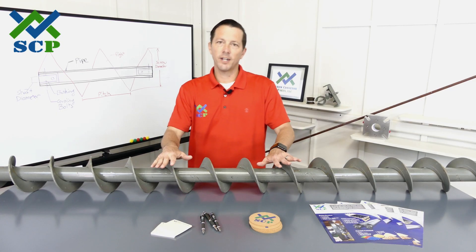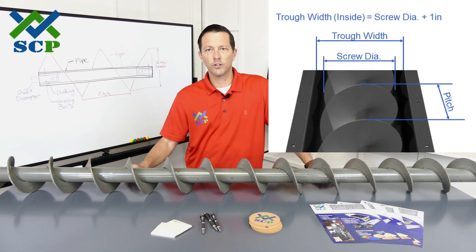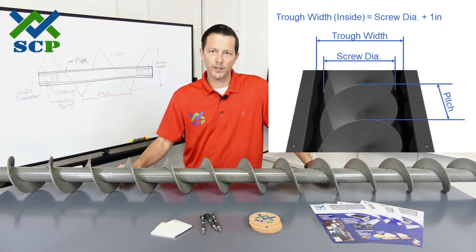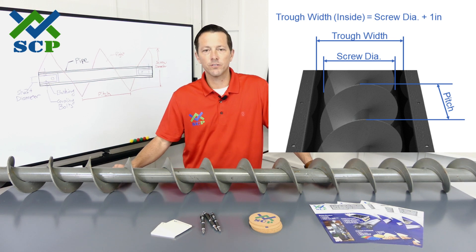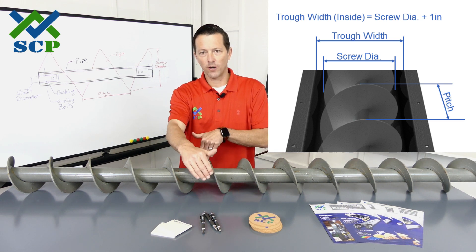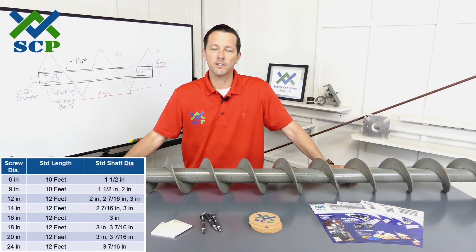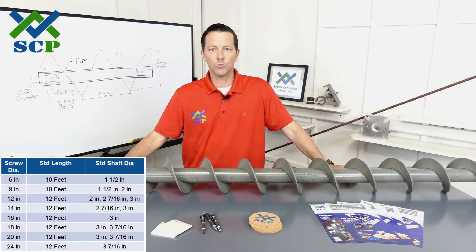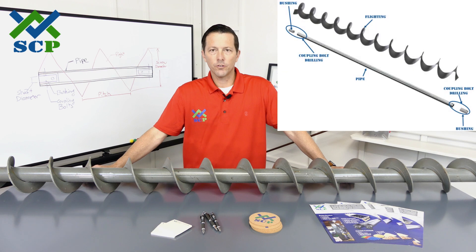What I have in front of me is a six inch diameter screw, and when we size screws we're talking about the outside diameter of the flighting. When we size a screw conveyor we also talk about the outside diameter of the flighting, so if we say we have a six inch screw conveyor that means we have a six inch screw and it's going to be in a one inch larger housing — so a seven inch housing. That applies to all our standard sizes: nine inch, 12 inch, 14, 16, all the way up to 24 inch — all based on the outside diameter of the screw.